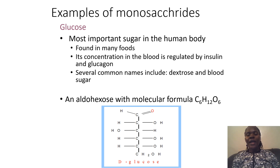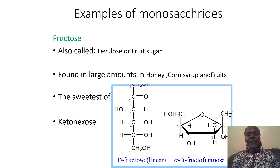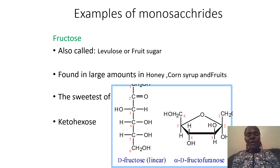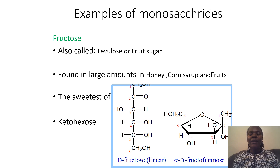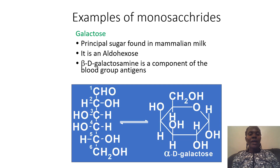Fructose, also known as fruit sugar, is found in honey, corn syrup, and fruits. It is the sweetest of all the sugars. It is a keto hexose because the second carbon atom has a keto group, and it is a six-carbon sugar.